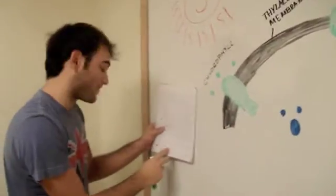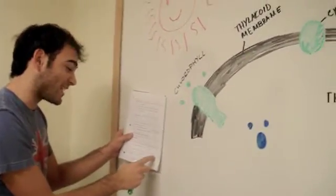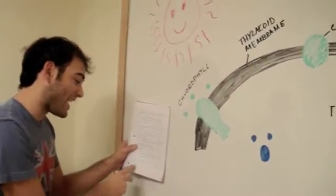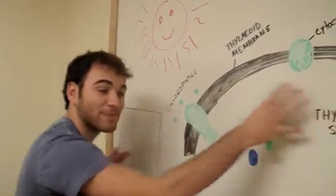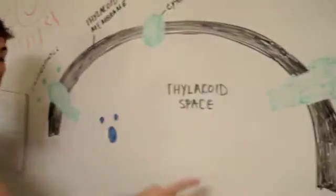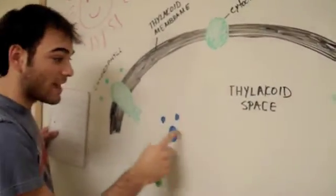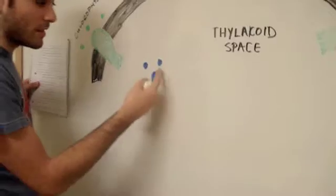Third, the chlorophyll must replace this electron, because the thylakoid space is an aqueous environment and is filled abundantly with water molecules. Here's an example of one right here.